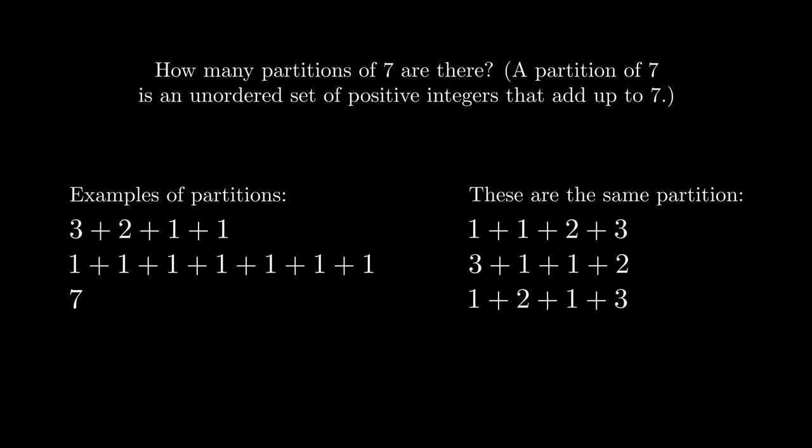How many partitions of seven are there? A partition of seven is an unordered set of positive integers that add up to seven. Here are some examples. Be careful though. Notice on the right, we count all of these as the same partition, because the partition doesn't care what order the numbers are in. Take a minute and give this problem a try.